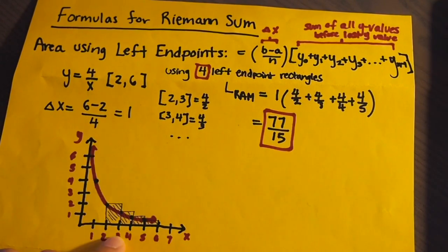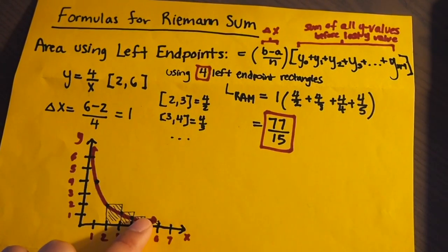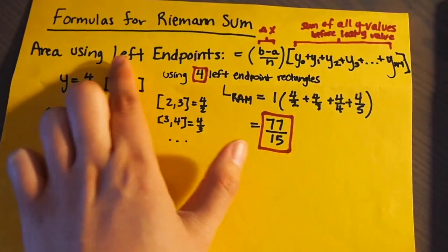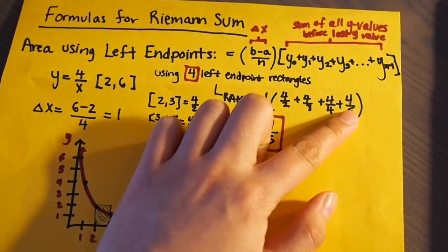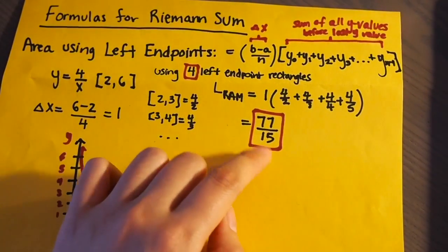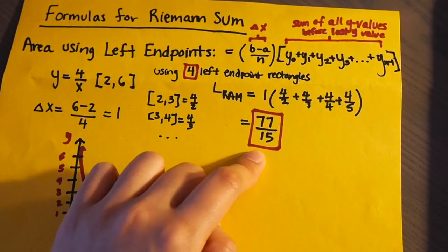So you want the value of 2, value of 3, value of 4, and value of 5. And when you plug it into the formula, you'll see that 1 times these y values, the sum of the y values, and you'll get 77 over 15.